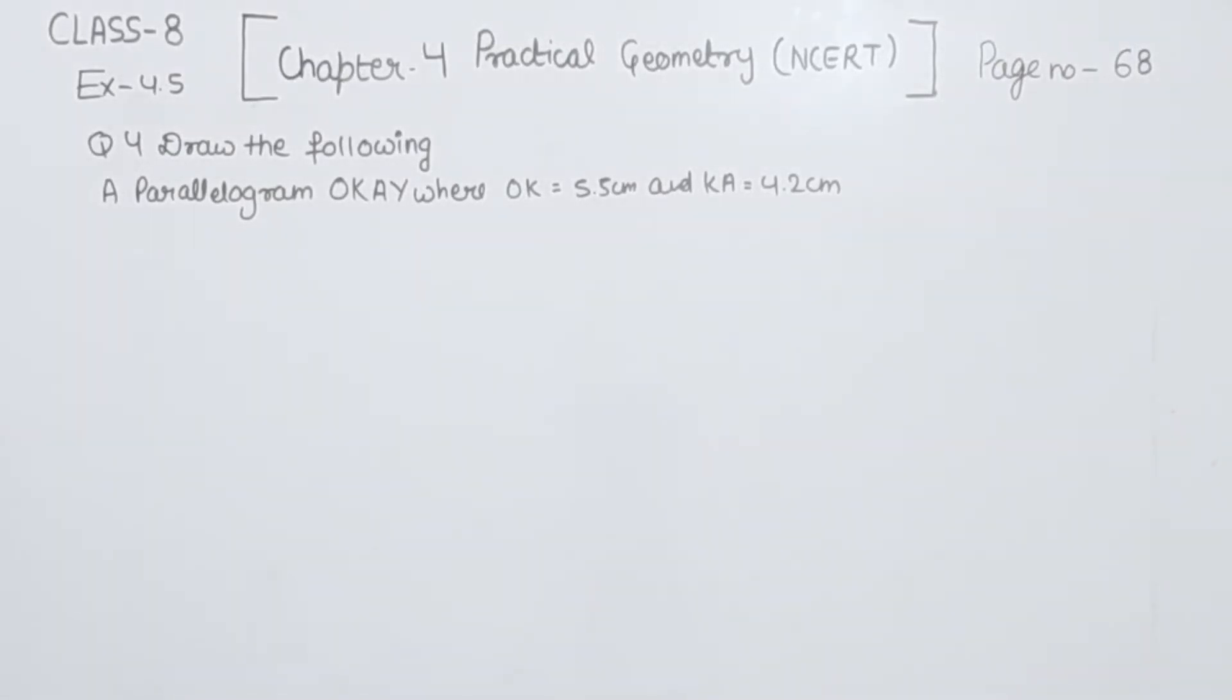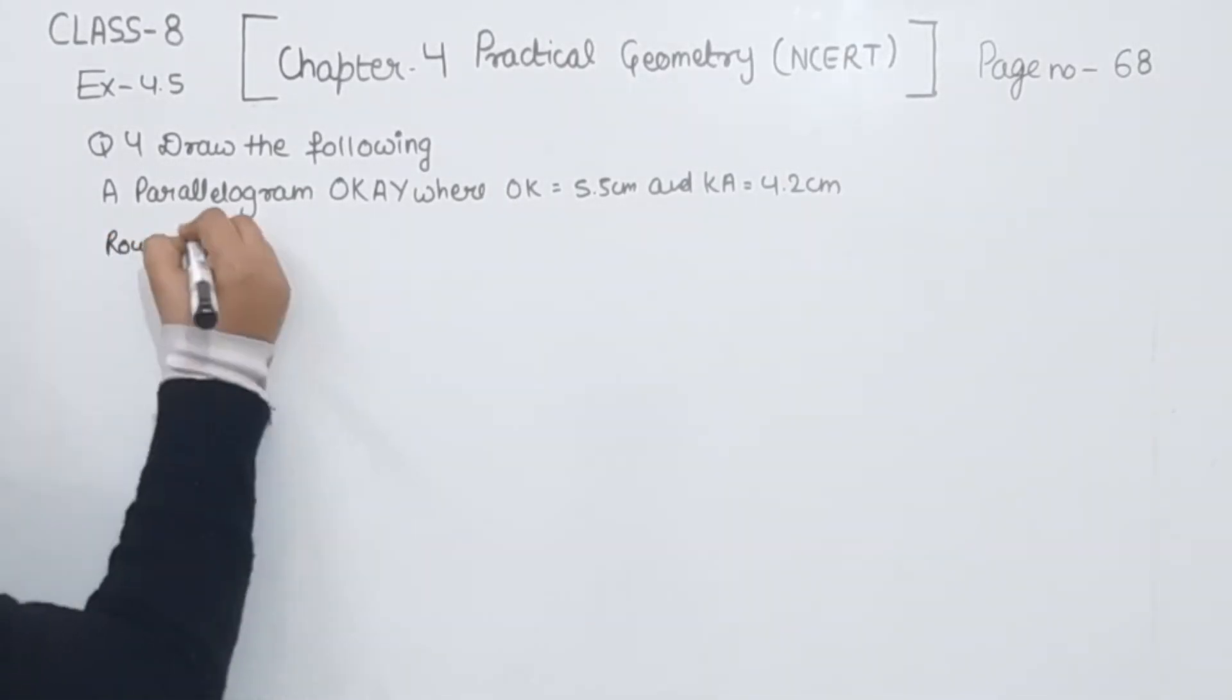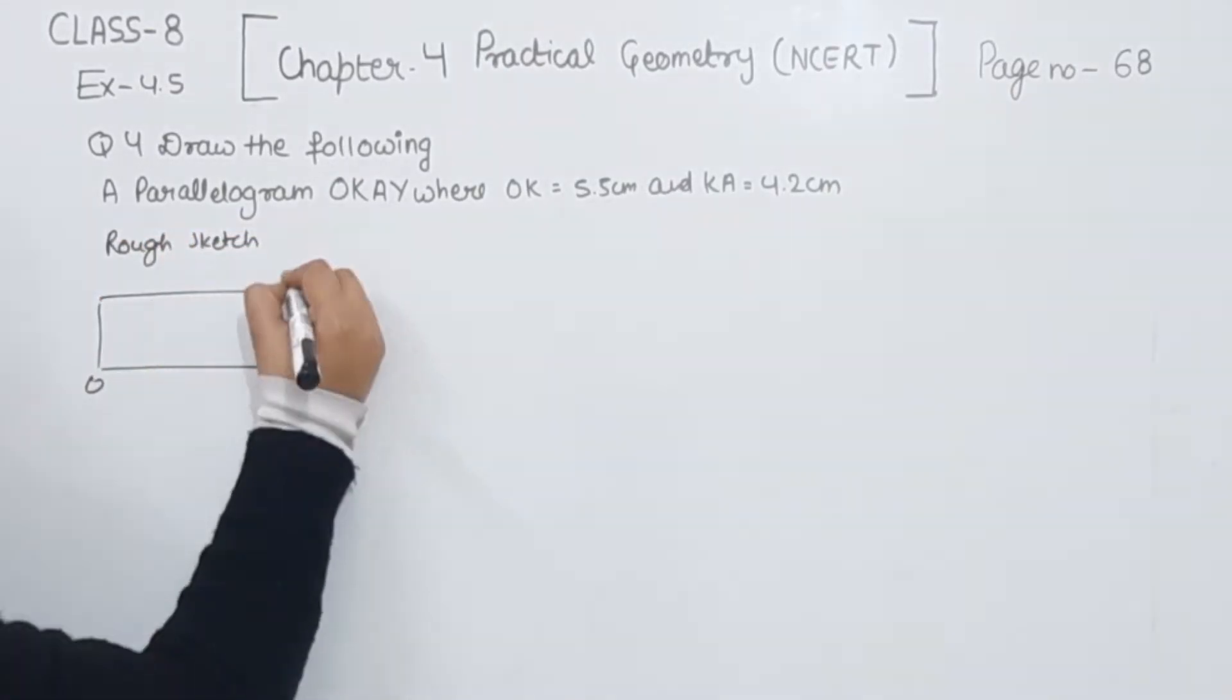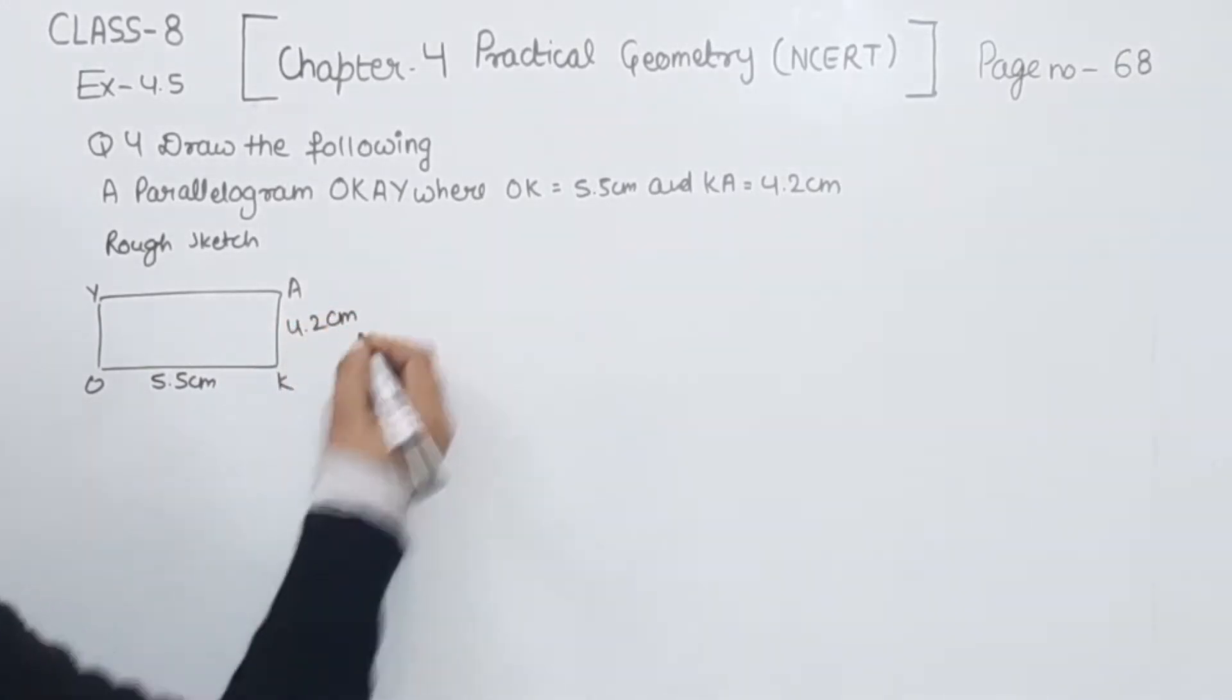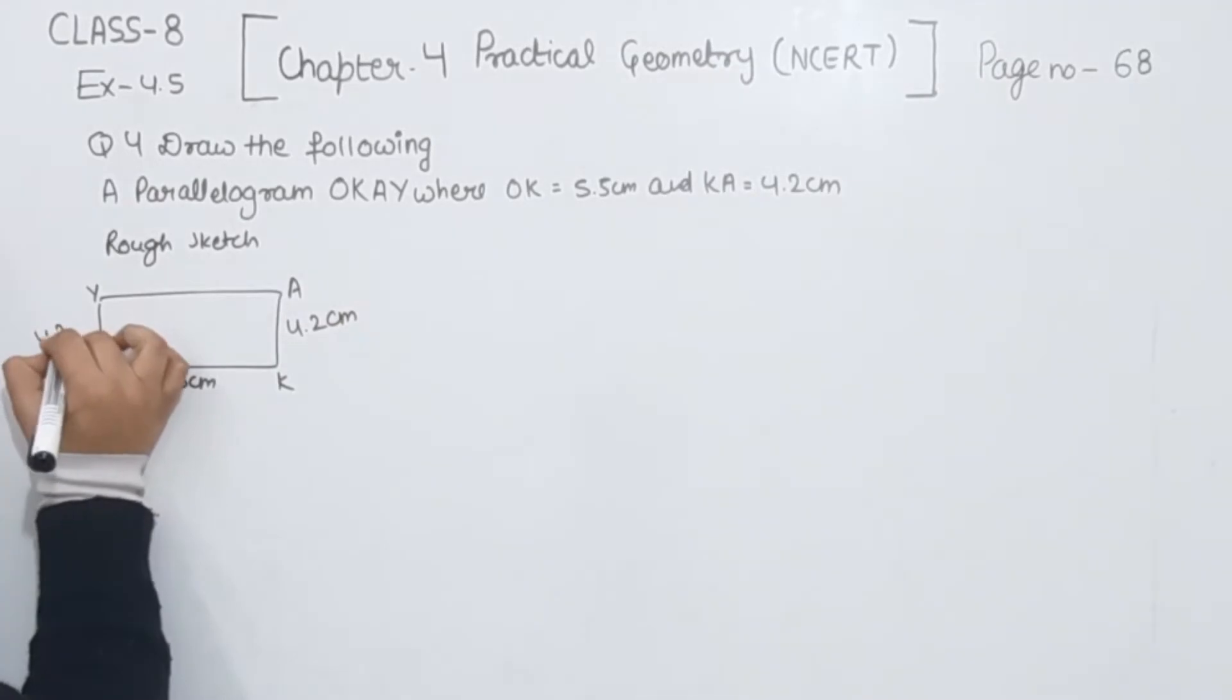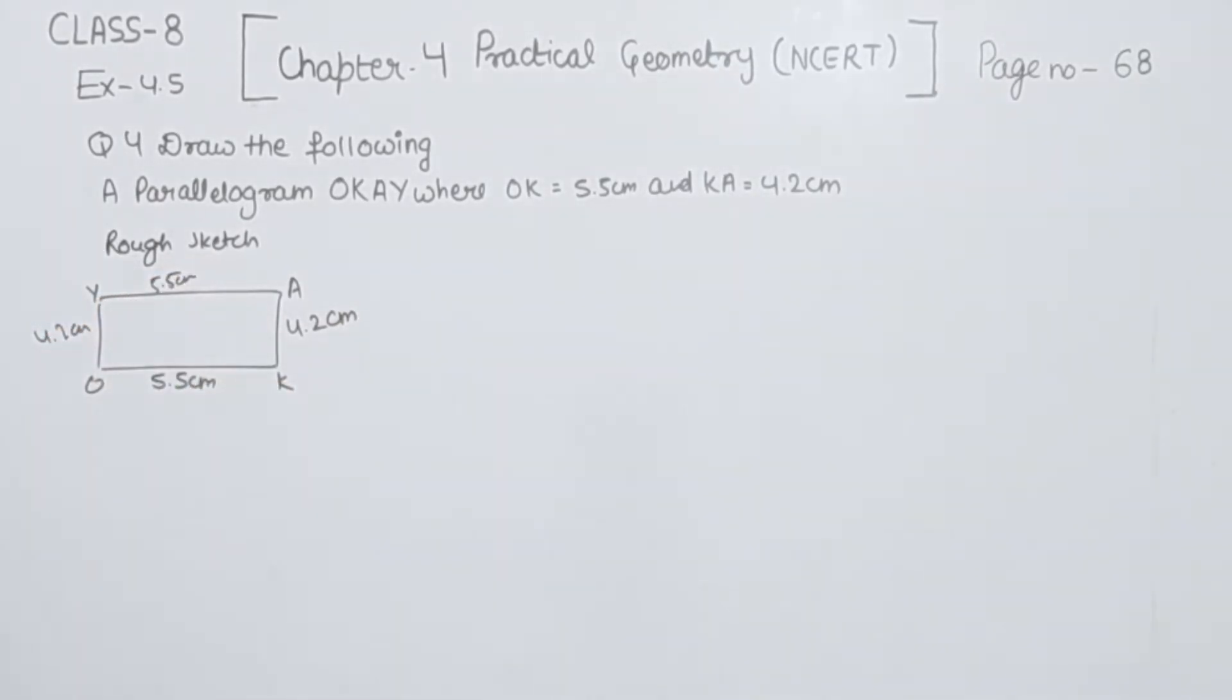So first of all, we are going to draw the rough sketch of the given figure. This will be rough sketch OKAY where we are having OK is equal to 5.5 cm and KA is equal to 4.2 cm. Now we know that the parallelogram opposite sides are equal to each other. So this is the rough sketch.